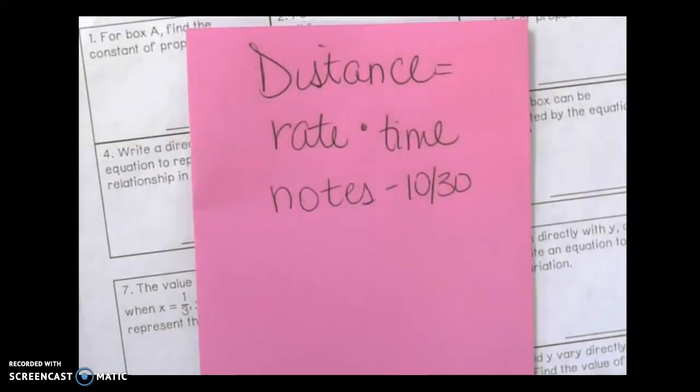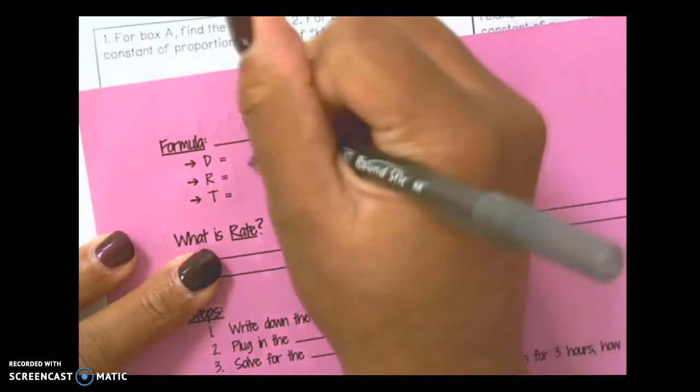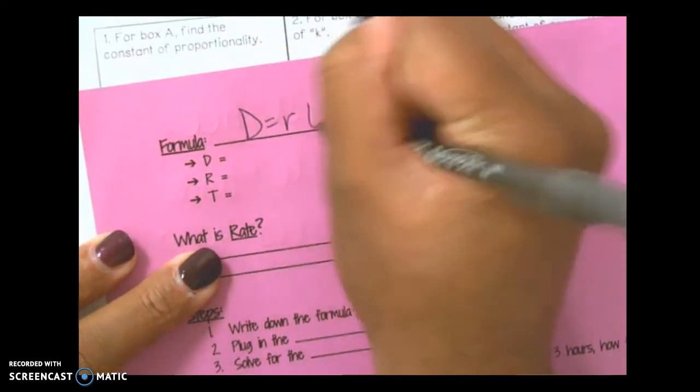So the rest of today's note on distance equals rate times time is your purple half sheet of paper. Here you need to write your formula, distance equals rate times time.